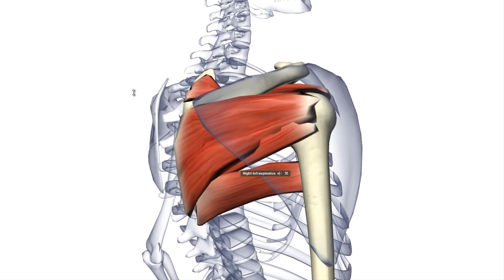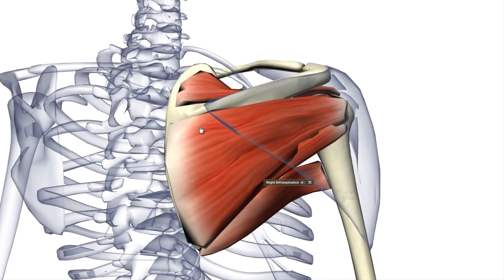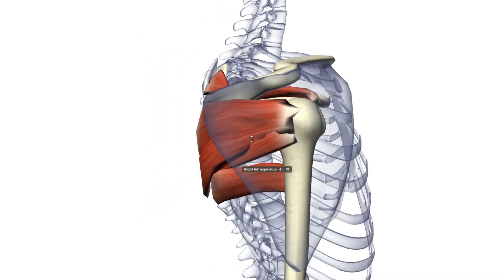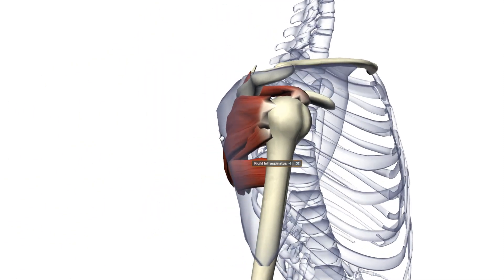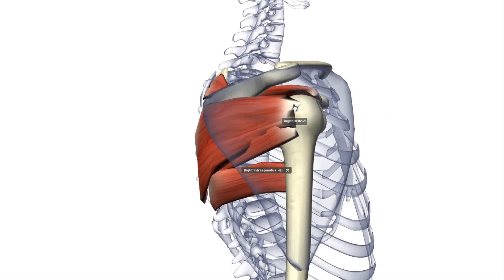Now we also have the infraspinatus, the muscle that is below the spine. The origin of the infraspinatus muscle is the infraspinous fossa of the scapula. The insertion of this muscle is the middle facet of the greater tubercle of the humerus. Just remember the middle facet of the greater tubercle of the humerus.